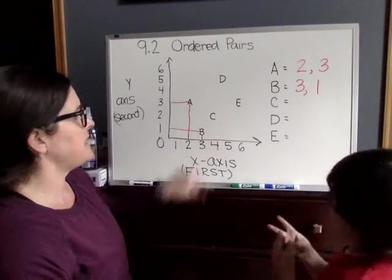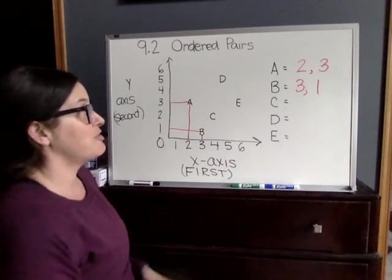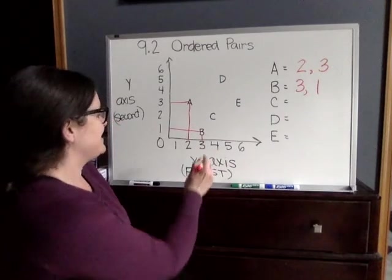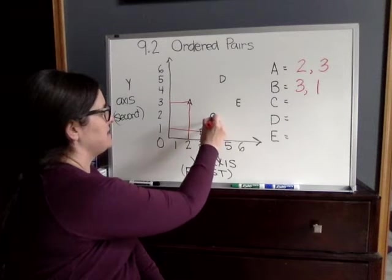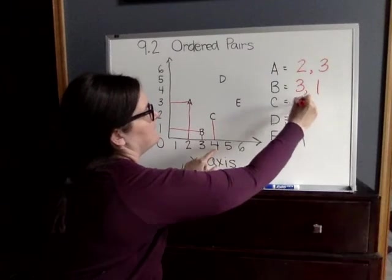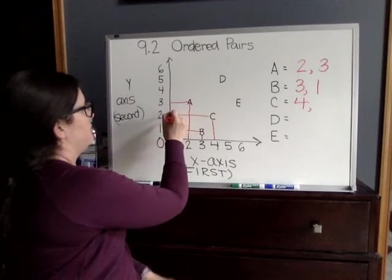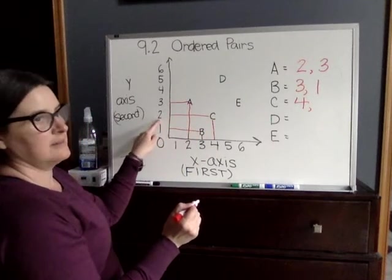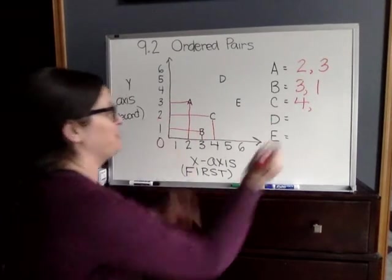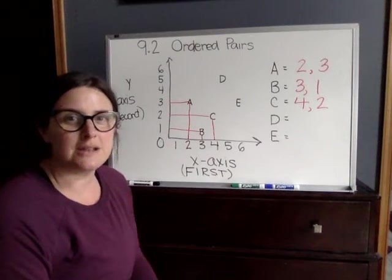All right, next we're going to go to letter C. There are letters 2, 3. Yes, there are two 3s so far. So next we're at C and C is starting with 4 comma and we're going over to 2. 4 comma 2 is our answer.